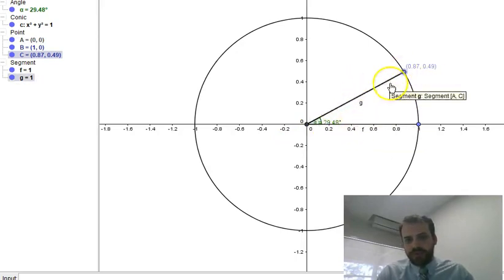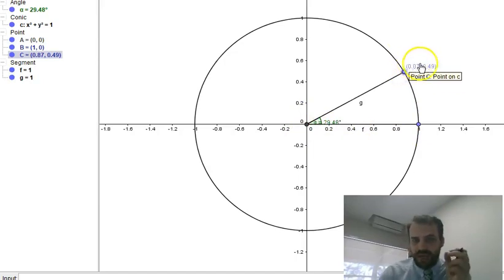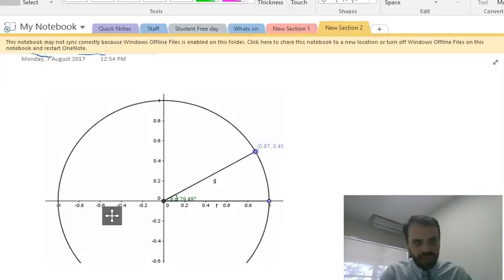Now because the hypotenuse is one, in this case, cosine of this angle is simply equal to the adjacent side, which is actually equal here to this coordinate, or to this part of this coordinate, the x value of this point's coordinate. So what that means for us is that this is equal to cosine theta.